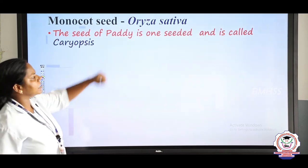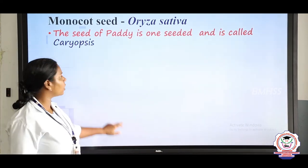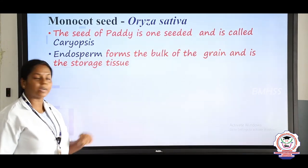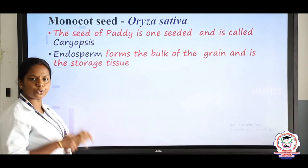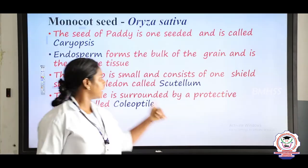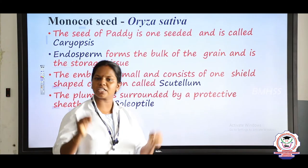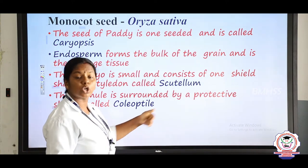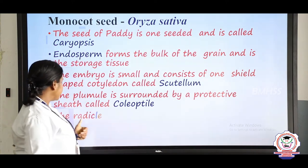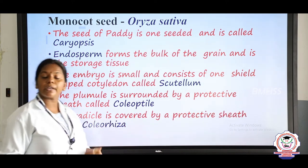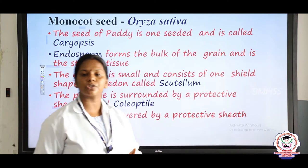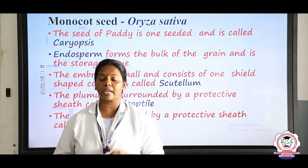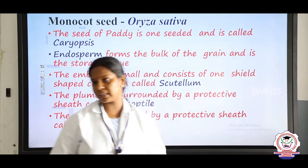The seed of paddy is one-seeded and called a karyopsis. The embryo gets complete nourishment through the endosperm where food is stored. The embryo is small and covered by the shield-shaped scutellum. The plumule is covered by the coleoptile and the radicle is covered by the protective covering called the coleorhiza. An important exam question is: differentiate between the dicot seed and the monocot seed, with examples.